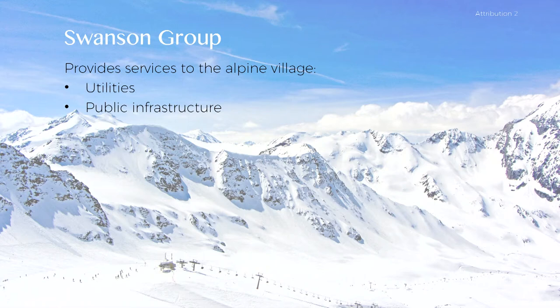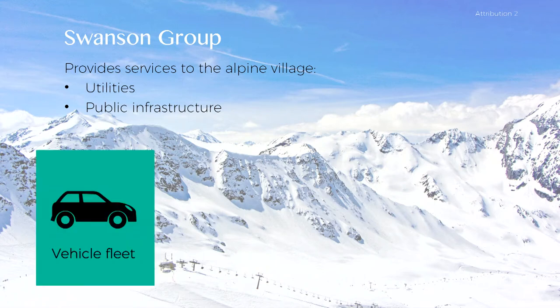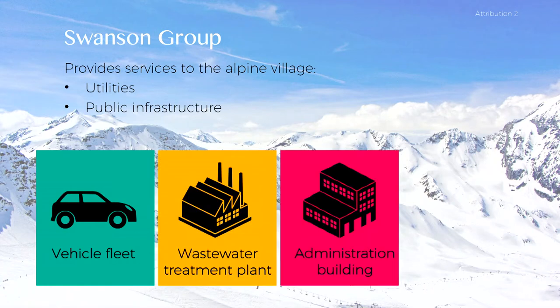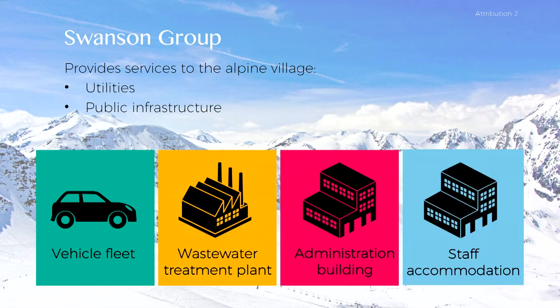To support the delivery of these services, the company owns and operates a fleet of cars, snowploughs and snowmobiles, a wastewater treatment plant, and an office building in the Alpine Village. Swanson Group also leases a block of self-contained units for permanent staff accommodation, which are owned and maintained by Azure Property. Which assets should we include in Swanson Group's carbon footprint? There are different approaches for deciding this, but for most companies, the criterion of operational control is recommended.